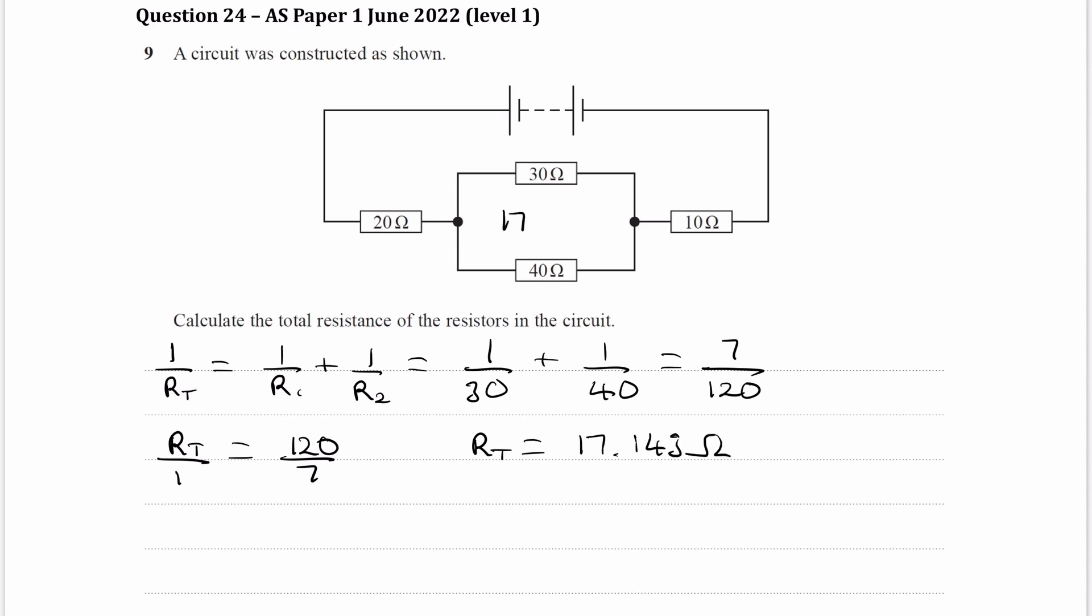And because that 17.143 ohm resistor, which is how we're modelling these two, is in series with the 20 ohm and the 10 ohm resistor, now we can just add up the three resistances as we would do for resistors in series. So 20 plus 10 plus the 17.143.